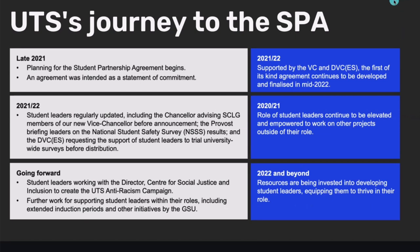We were fortunate that the deputy vice chancellor at the time was quite supportive — having a key decision maker willing to be on the other side of negotiations is essential; we can't negotiate with ourselves. From there, discussion about the SPA began: we conceptualized what we wanted it to look like. Then the National Student Safety Survey results came out, focused on sexual assault and harassment on campus, and UTS produced some troubling results. That helped clarify our priorities as a student leadership cohort. We also ran an anti-racism campaign — all of this worked towards the final agreement.